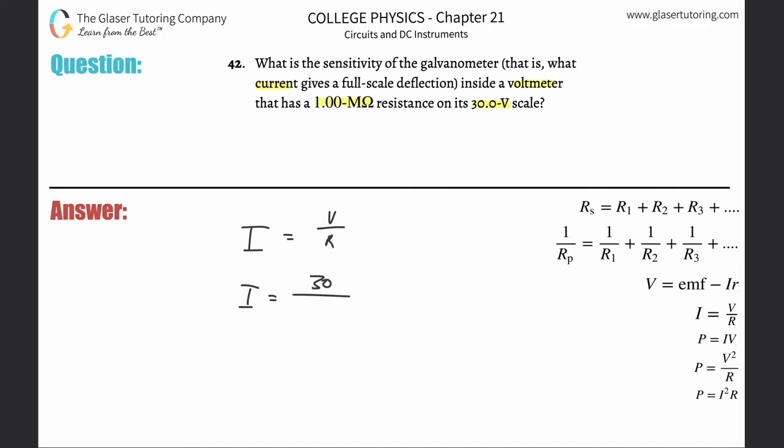The current here is going to be the voltage, which they gave us was 30 volts. The resistance is in ohms, but they gave it to us in mega ohms, so just do your conversion: 1 × 10^6 ohms. When you do the division, it's simply going to be 3.00 × 10^-5 amps.